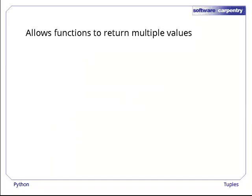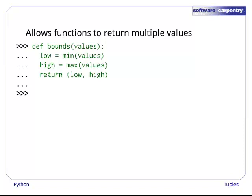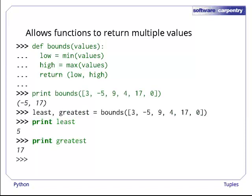This same trick, tuple-to-tuple assignment, allows functions to return several values at once. For example, here's a function called bounds that returns the lowest and highest elements of its parameter values at the same time. Sure enough, it returns a two-element tuple. And if we assign that tuple to a pair of variables, Python unpacks the two values and copies them into the variables in the right order.